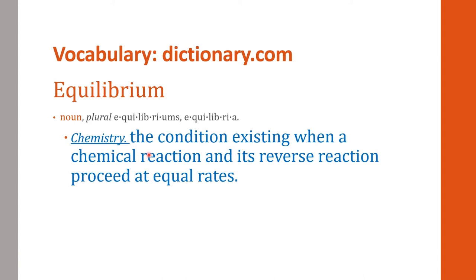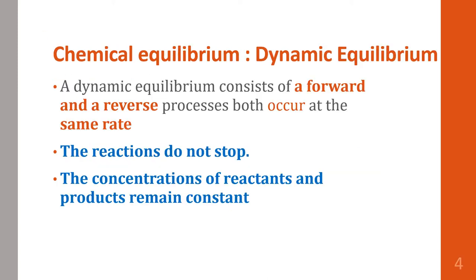Dictionary.com gives the meaning of equilibrium in chemistry as the condition existing when a chemical reaction and its reverse reaction proceed at equal rates. From this definition, we are talking about a chemical reaction in two directions — one in the forward direction and another in the reverse direction — and both proceed at equal rates. So equilibrium in chemistry refers to the equality of the rates of reaction.